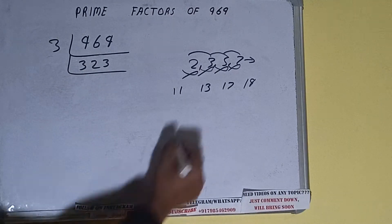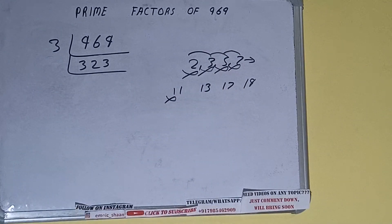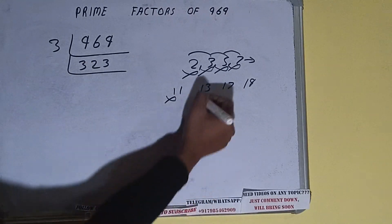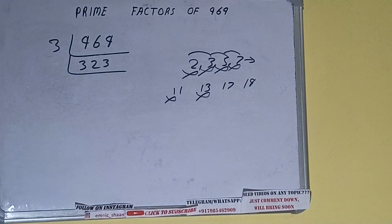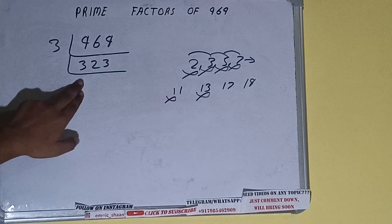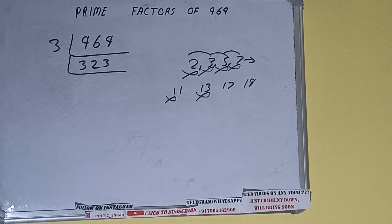11 times 2 is 22, but 323 is not divisible by 11. Let's check with 13.